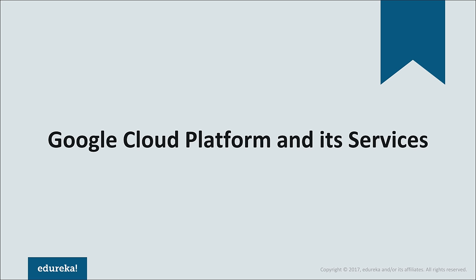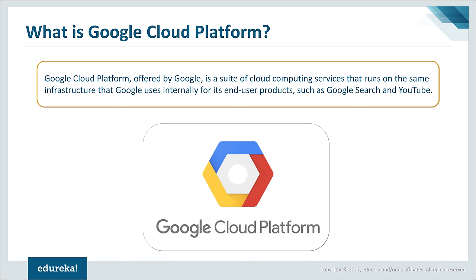Moving on, let's now discuss what Google Cloud Platform is all about and the various services it has to offer. Google Cloud Platform is a cloud service offered by Google, and it gives you a suite of cloud computing services such as compute, storage, and networking. You can use all these services for the needs of your own application to host it. Some of the products already on Google Cloud Platform are Google Search and YouTube, and that speaks a lot about what kind of infrastructure they're offering.